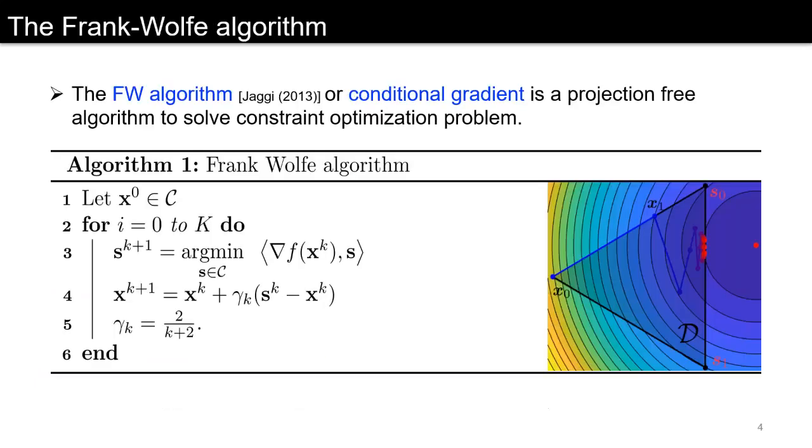The Frank-Wolfe algorithm or conditional gradient is a projection-free algorithm to solve constrained optimization problems. We initialize a vector in constraint set C and step 3 solves the linear minimization problem which is given as argmin_{s∈C} of the inner product of the gradient at x^k with s.